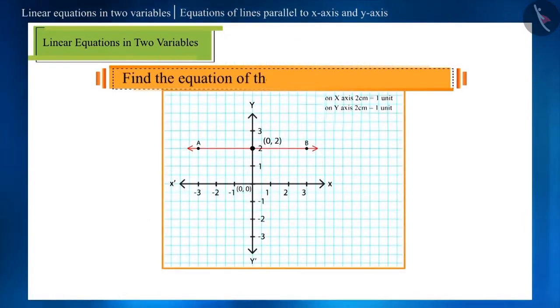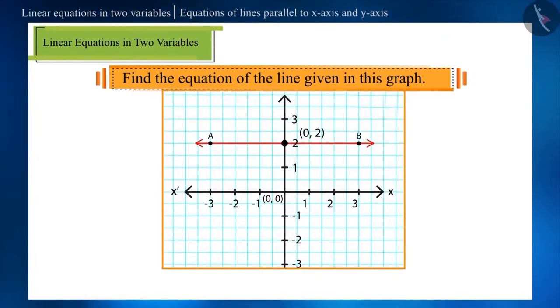Find the equation of the line given in this graph. From the graph, it is evident that line AB is parallel to the x-axis.